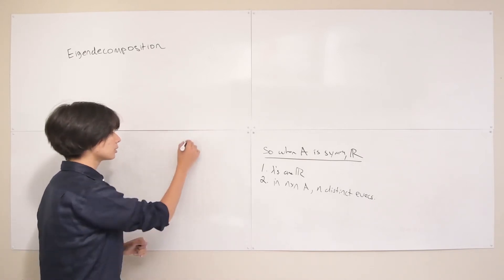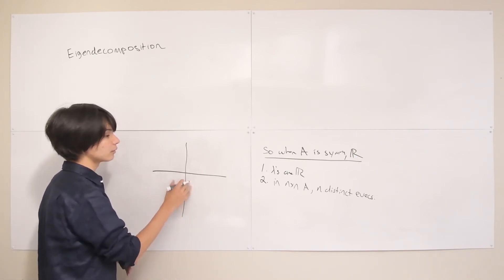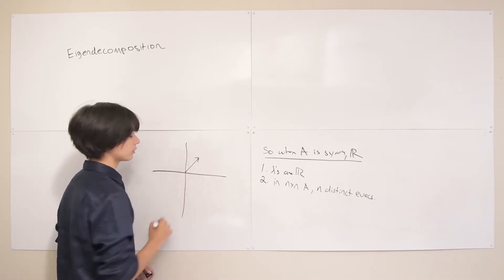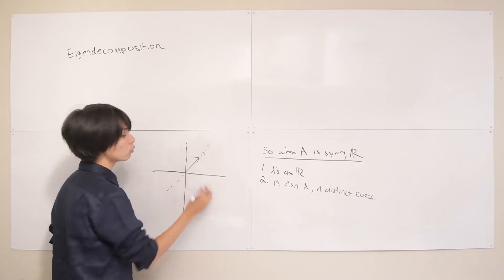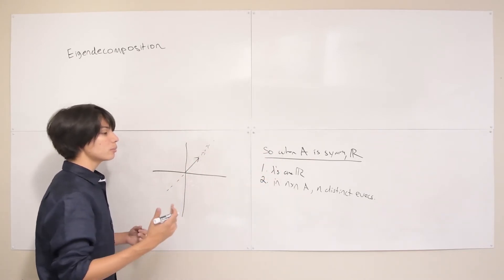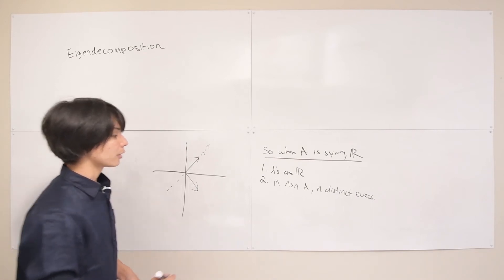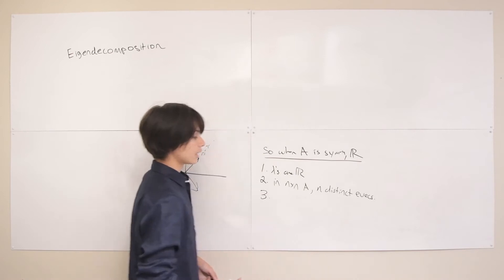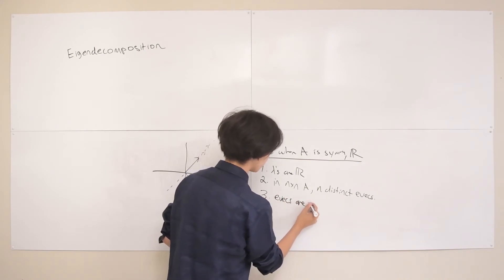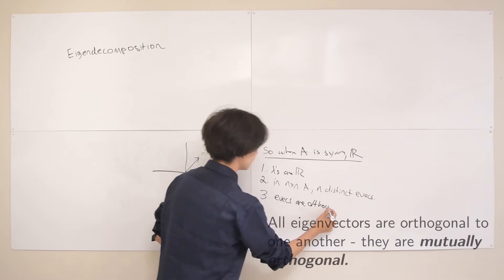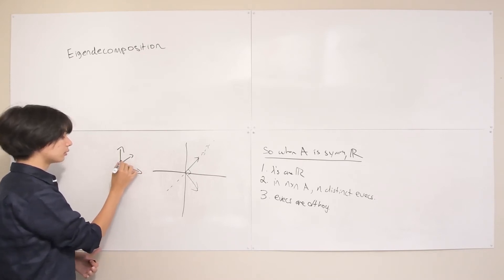What I mean by distinct: in the two-dimensional case with n=2, you have two distinct eigenvectors. Technically there are infinitely many eigenvectors along any given eigenvector line, since any vector along that line won't change direction when transformed by A. But by distinct I mean vectors going in different directions. Third, those n distinct eigenvectors are all going to be orthogonal to one another.